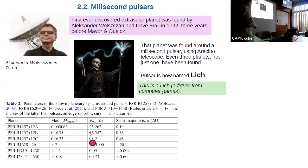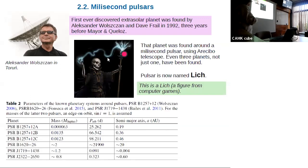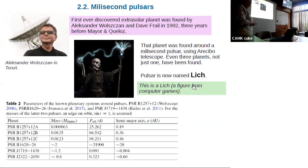A very difficult question is how those planets could have formed around a millisecond pulsar. A formation scenario is rather difficult to imagine — maybe it was a kind of interception. Because of these difficulties, when there was a call for a name for this millisecond pulsar, the winning name was 'Lich' — a character from computer games that is really a bad, awful character and may occasionally disappear.